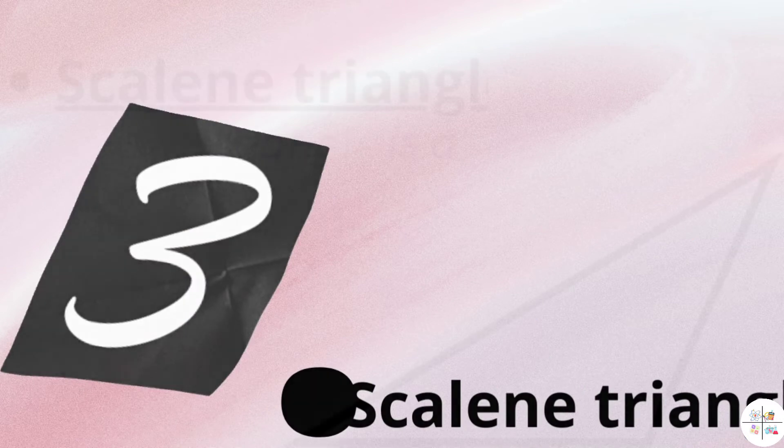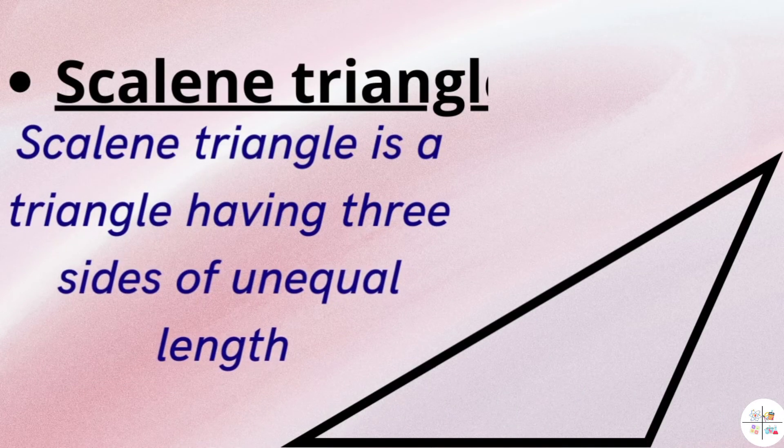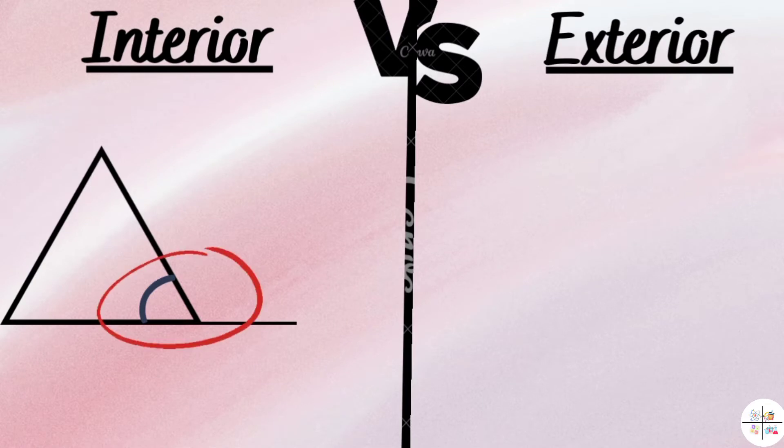A scalene triangle is a triangle having three sides of unequal length. This is the interior angle and this is the exterior angle of a triangle.